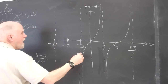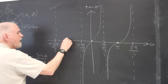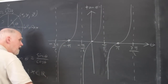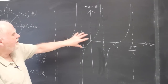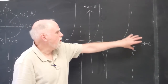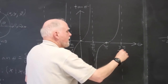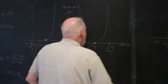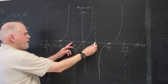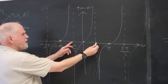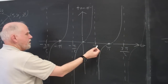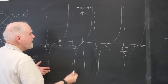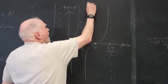Continuing in this manner, we get repeating branches. Everything the tangent does from negative pi over two to pi over two repeats, so we say the period of the tangent is pi.